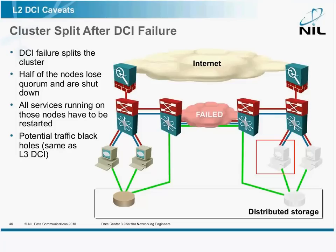To prevent that, all cluster solutions have so-called cluster quorum, which means that after the split, you have to be in the bigger part of the cluster. If you're not, then you shut down. This means that after the DCI link fails and the cluster nodes figure out that they have a problem — they have lost quorum — half of the cluster nodes on the right-hand side, for example, will shut down. So just because you've lost the interconnect link for a few seconds, or maybe a minute depending on your timers, you could lose half of the servers in the cluster.